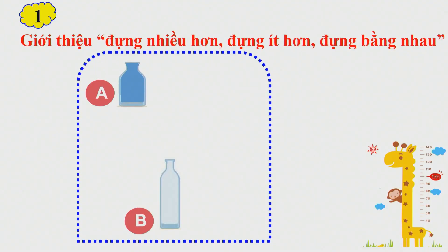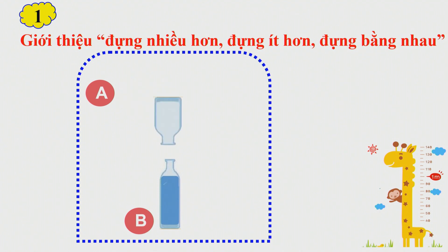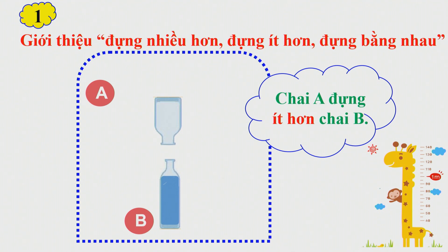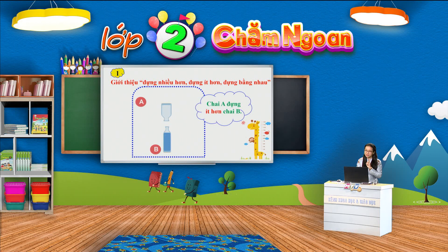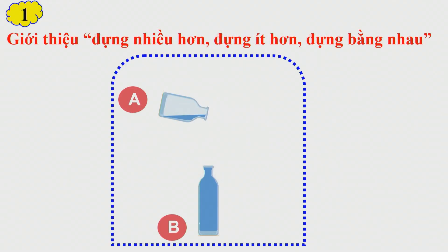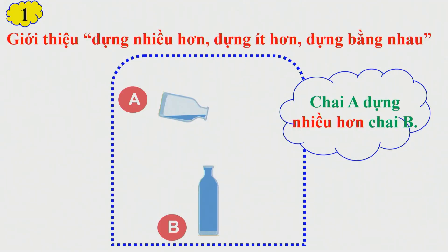Trường hợp thứ 2: cô đổ đầy nước từ chai A sang chai B. Đã đổ hết nước của chai A rồi mà chai B vẫn chưa đầy nước. Như vậy chúng ta có câu kết luận: chai A đựng ít hơn chai B. Trường hợp thứ 3, cô lấy chai nước A, cô đổ sang chai B. Thì đã đầy chai B rồi mà chai A vẫn chưa có hết nước. Như vậy cô kết luận chai A đựng nhiều nước hơn chai B.